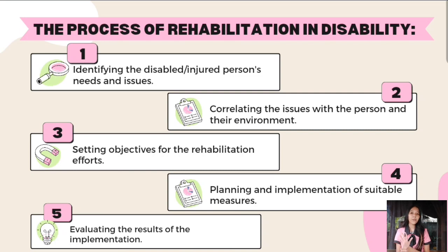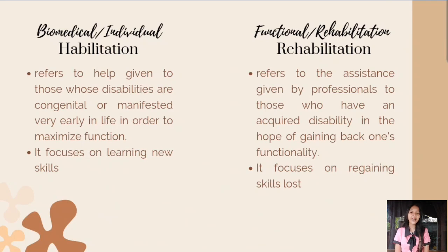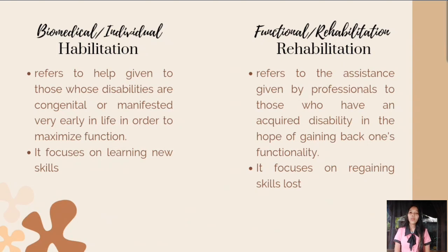The main difference between the biomedical model and functional rehabilitation model is in the concept of habilitation and rehabilitation. In the biomedical model, it suggests habilitation, which refers to the help given to those whose disabilities are congenital or manifested very early in life in order to maximize their function. Habilitation refers to the health care services that assist a person in acquiring, maintaining, or improving skills. Communication and daily living tasks are examples of connected skills.